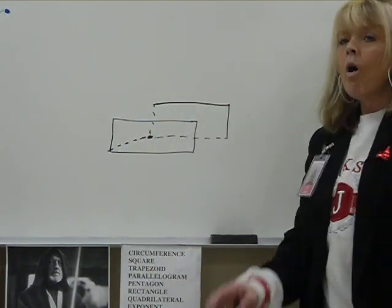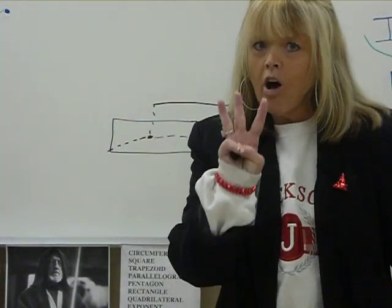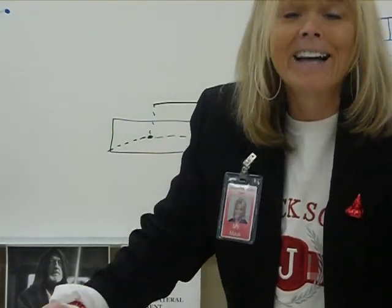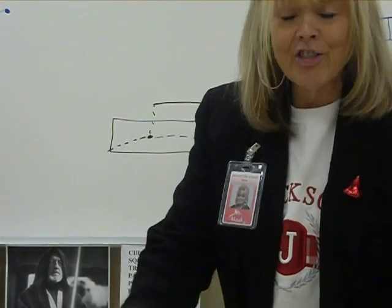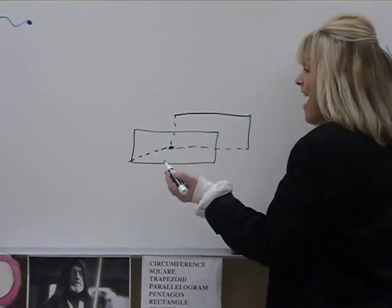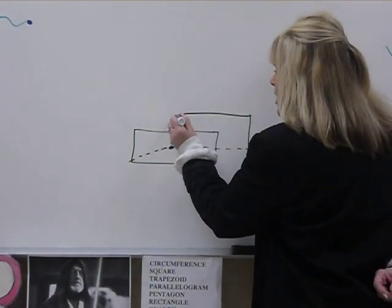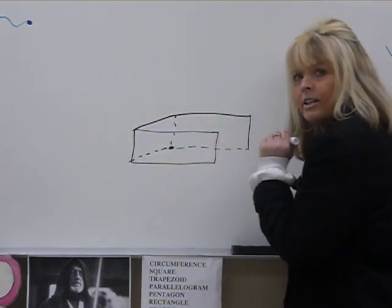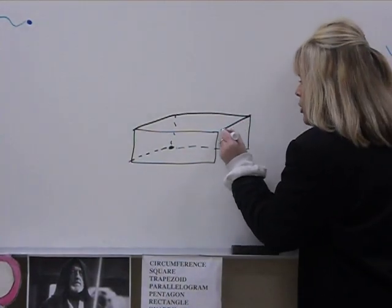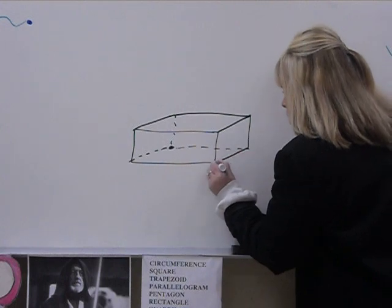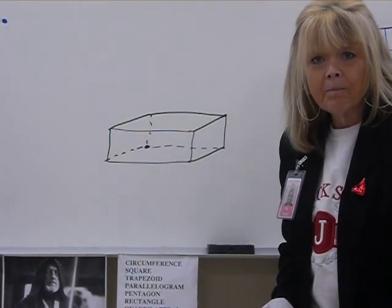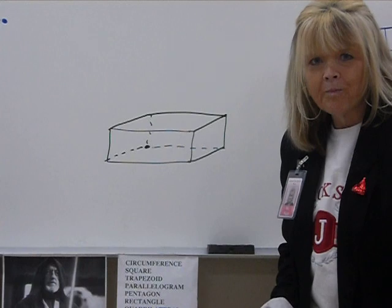You will always have three dotted lines from the dot — they're all from the dot and they're dotted. Then you connect vertex to vertex with solid lines, vertex to vertex solid, vertex to vertex solid. And you've got yourself a rectangular prism and it's beautiful.